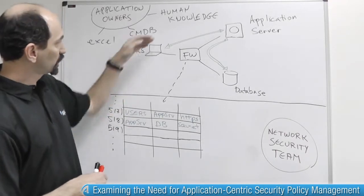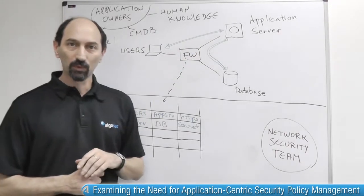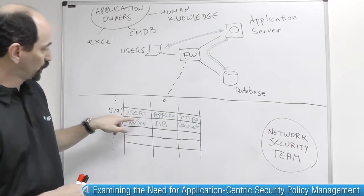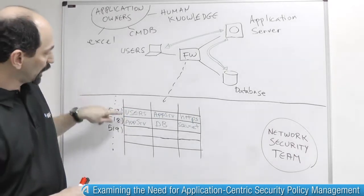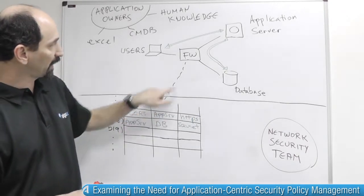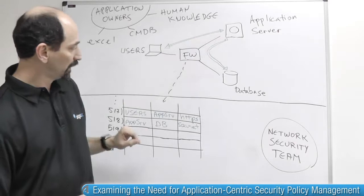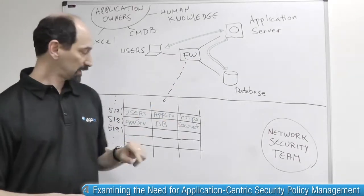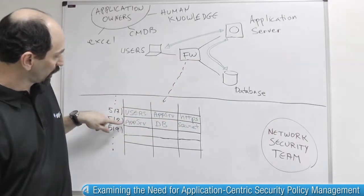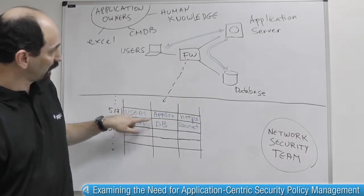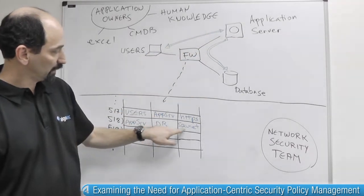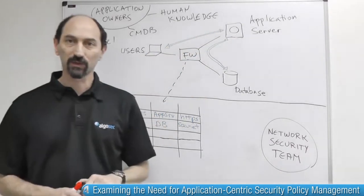In this case, we have these two blue communication patterns, and we can see that there are two rules: one allowing traffic from the users group to the application server using HTTPS, and then there's another rule allowing traffic from the application server to the database using some other service.